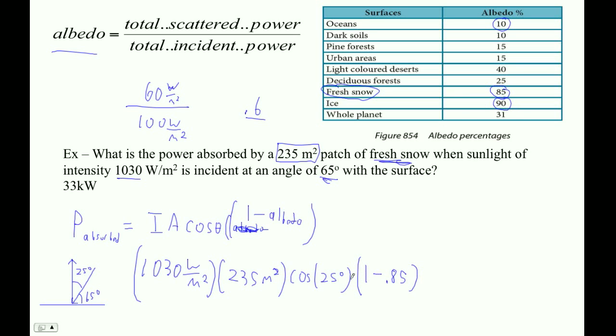So I'm going to use 1 minus 0.85. And the reason it's 1 minus that is that I'm saying that 85% is reflected, is scattered. That's what scattered means - it's reflected. So therefore, 15% is absorbed.